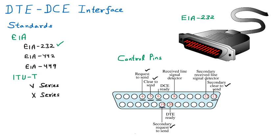Pin number 6 is DCE Ready — whenever the modulator or demodulator is ready to do its task, pin number 6 signals DCE Ready. Pin number 20 is DTE Ready — when the other person's DTE is ready to receive, a signal comes from their side indicating DTE is ready. Pin number 8 is the Received Line Signal Detector — it detects that data is coming through the line. If pin 8 is not working, pin number 12 performs the same operation as the secondary Received Line Signal Detector.